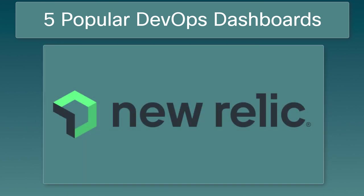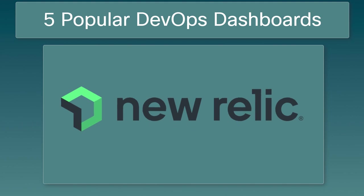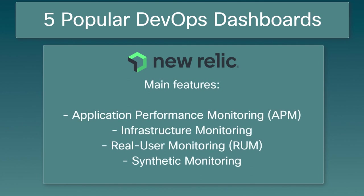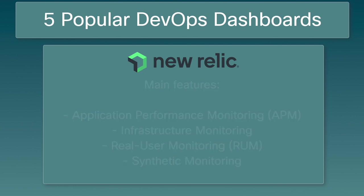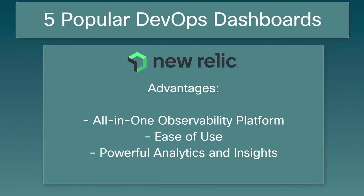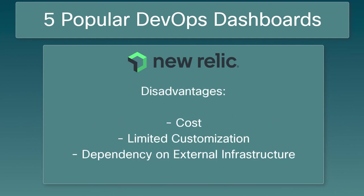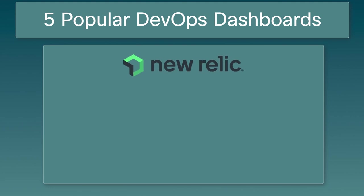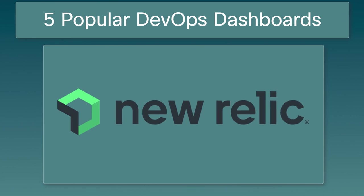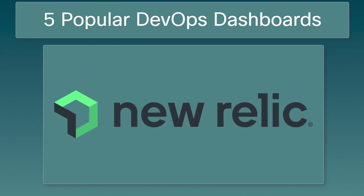New Relic is a cloud-based observability platform that provides monitoring and analytics capabilities for applications, infrastructure, and customer experience. Main features include application performance monitoring, infrastructure monitoring, real user monitoring, and synthetic monitoring. Advantages include an all-in-one observability platform, ease of use, and analytics and insights. Disadvantages include cost, limited customization, and dependency on external infrastructure. Organizations should consider cost implications and the level of customization required when choosing New Relic.